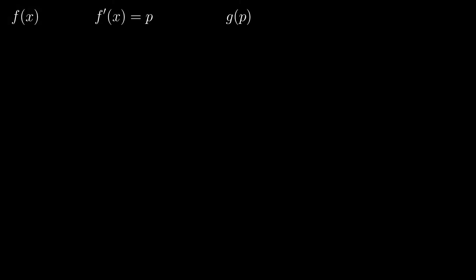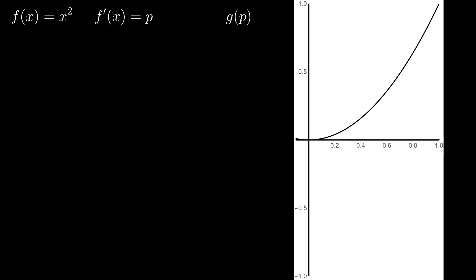In other words, it has to be possible to recover f of x from g of p. So, let's take a look at the function f of x equals x squared. The first derivative of this function is 2x.